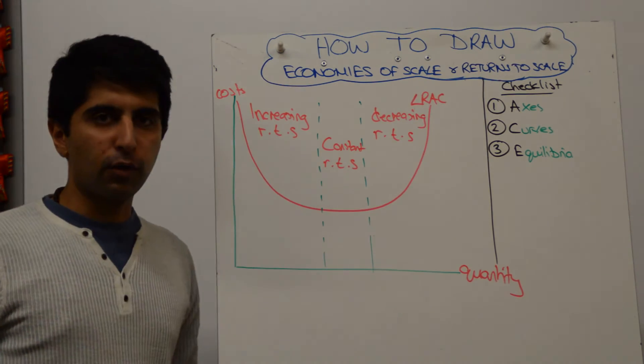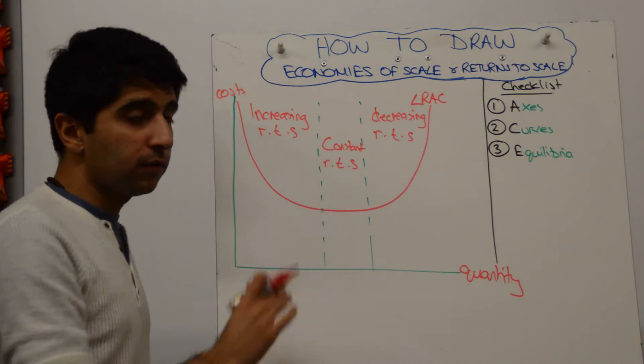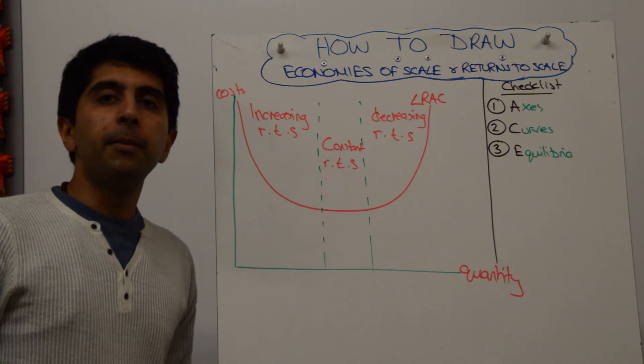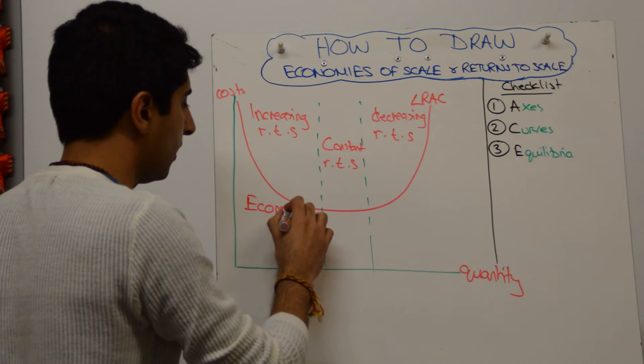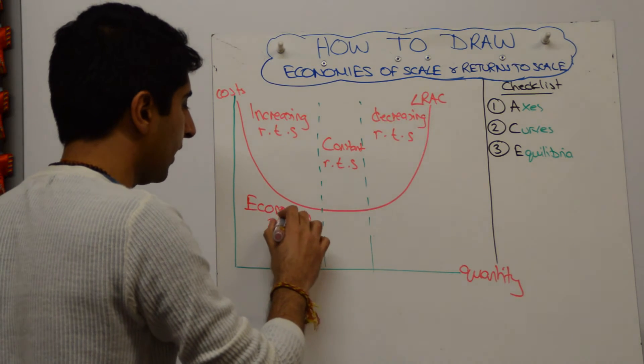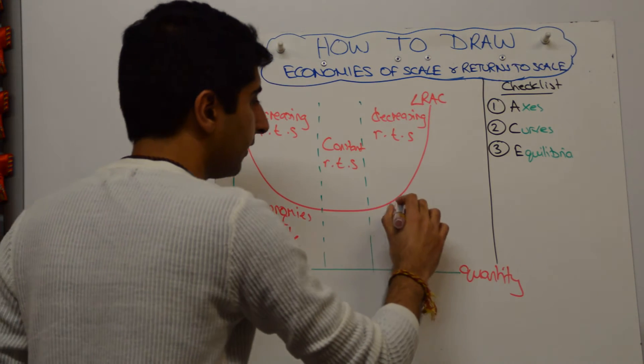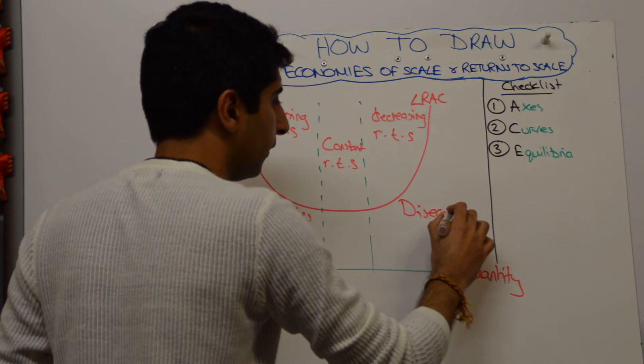The decreasing part of the long-run average cost curve shows increasing returns to scale. But why? Because there are economies of scale. So you can also label that: economies of scale.